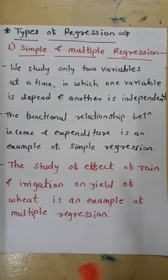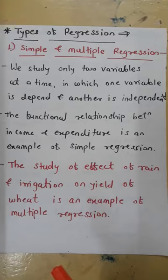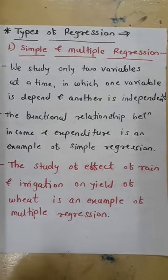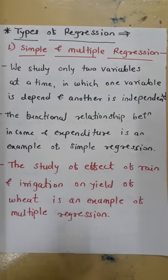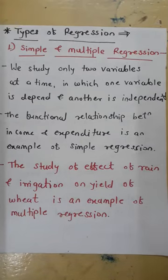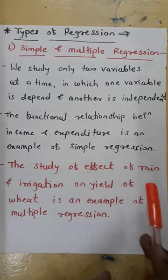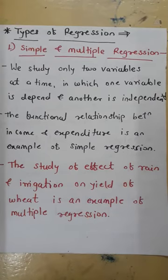The study of the effect of rain and irrigation on yield of wheat is an example of multiple regression. Rain is the independent variable and irrigation is the dependent variable — irrigation depends on rain conditions. The wheat production depends on both rain and irrigation, making it a multiple regression example.